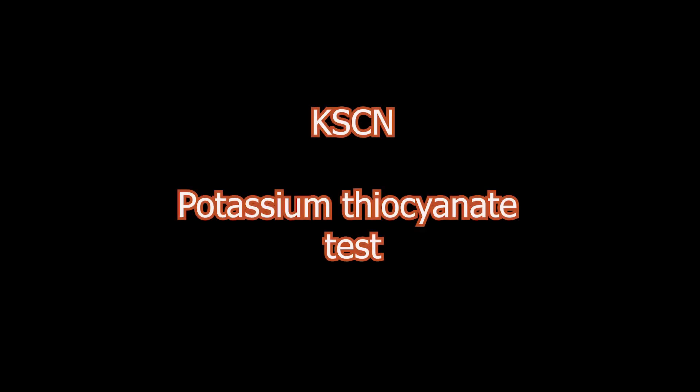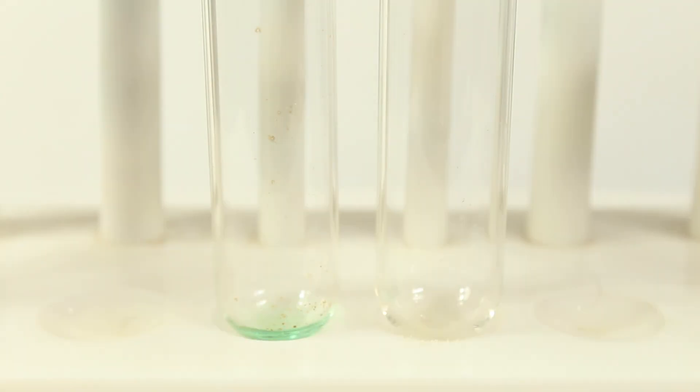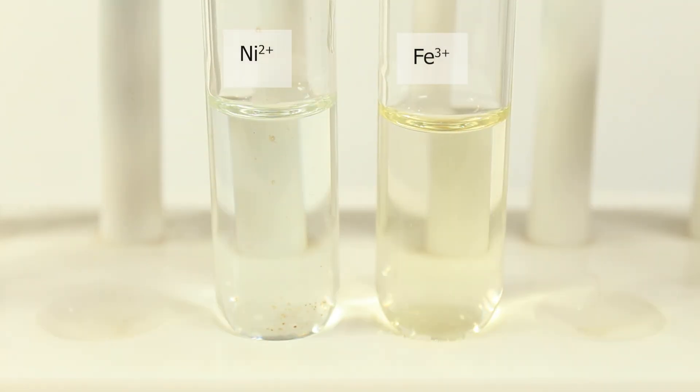Okay, for the next one. Potassium thiocyanate. Again ligand to form complexes of transition metal ions. And we expect characteristic color for iron-3 complex.